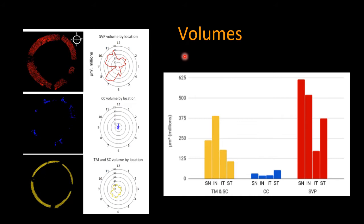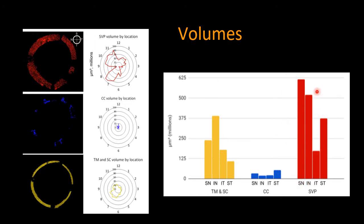The volumes are regionally different. The largest volumes are contained, as expected, in the superficial venous plexus. Collector channels are tiny, as reflected in the volume chart. The TM and Schlemm's canal also contain a respectable volume, with the nasal ones appearing largest — nasal TM and nasal Schlemm's canal. That is not the case with the collector channels; however, in the superficial venous plexus and additional vessels, the nasal vessels are again the biggest.